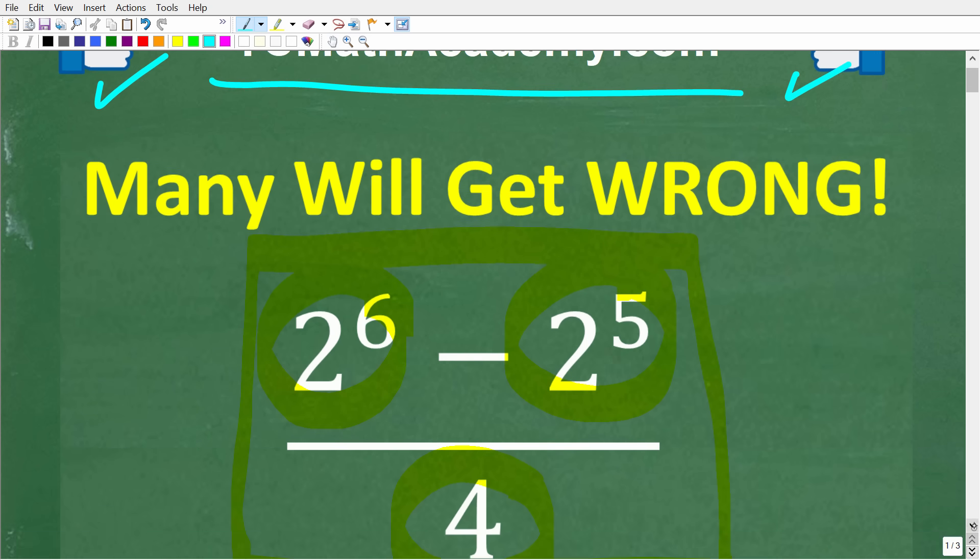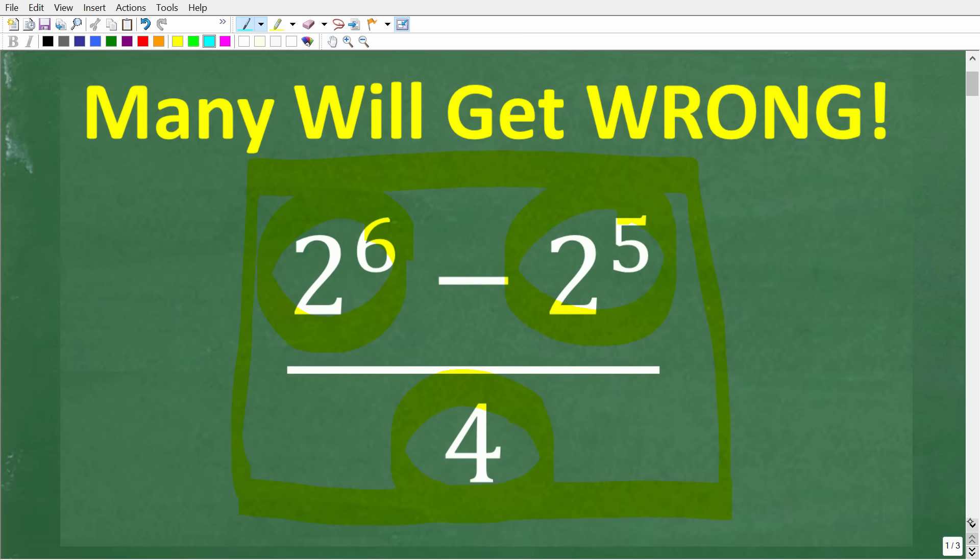All right, so one more time, we're not going to use a calculator. So we have 2 to the 6th power minus 2 to the 5th power. This is the numerator in this fraction. And then, of course, we're going to divide all of this by 4.